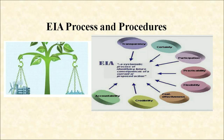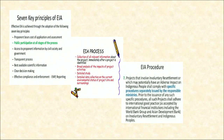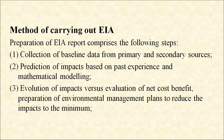EIA procedures and process have several components, each separately mentioned. This figure shows EIA process and procedures. The next slide shows various steps, process and procedure which we will discuss in detail. Now, the methods of carrying out EIA. Preparation of an EIA report comprises the following steps: collection of baseline data from primary and secondary sources; production of impact based on past experiences and mathematical modeling; and evaluation of impact versus net cost benefit.